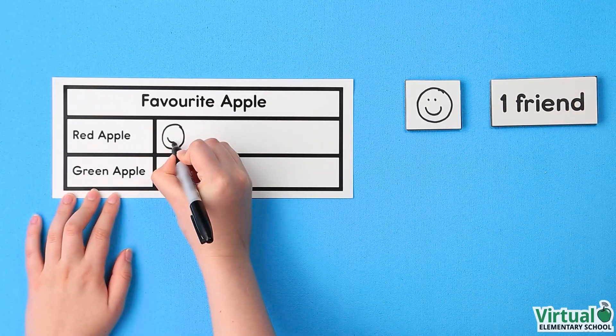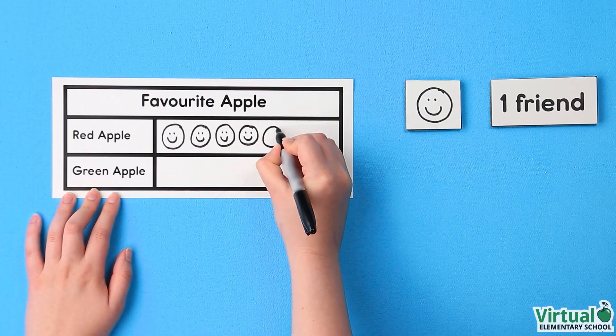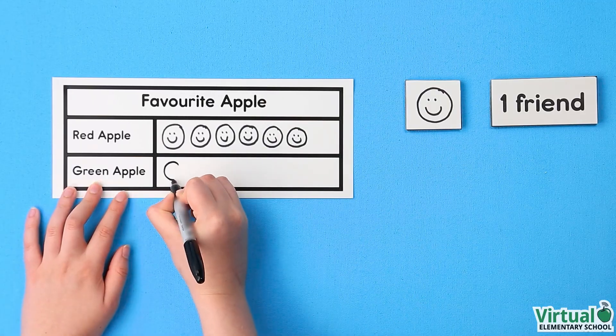6 friends liked red apples. Hanna draws 6 smiley faces on the pictograph. 4 friends liked green apples.